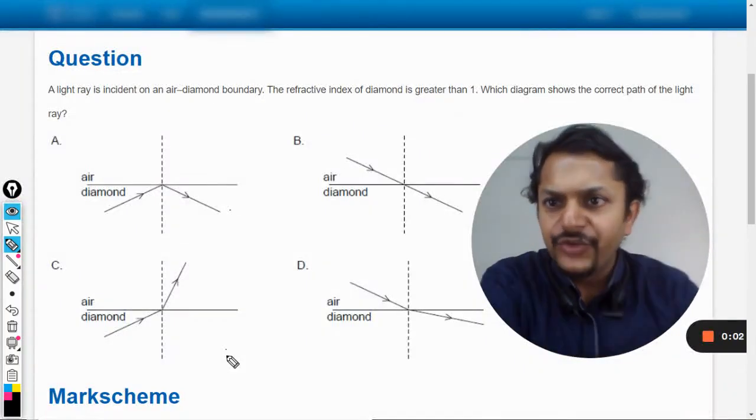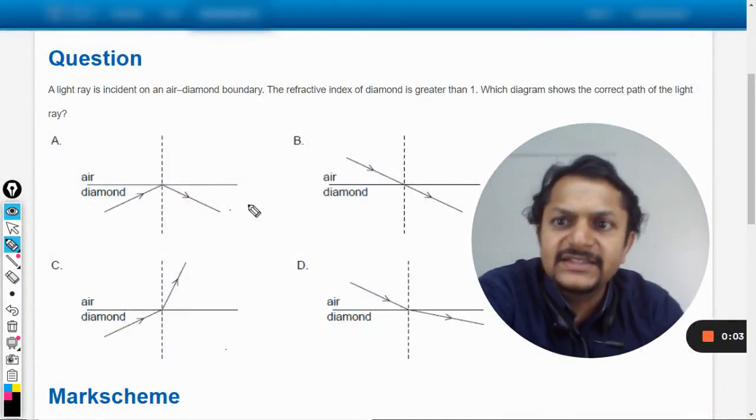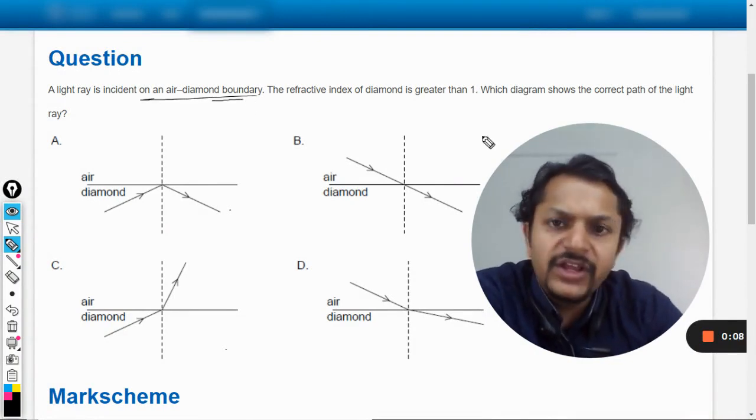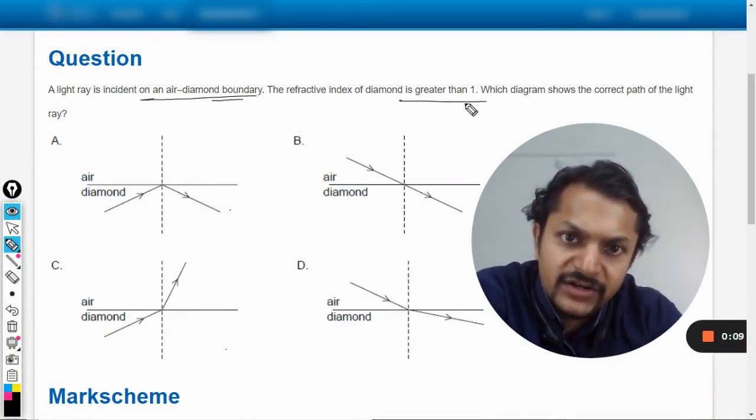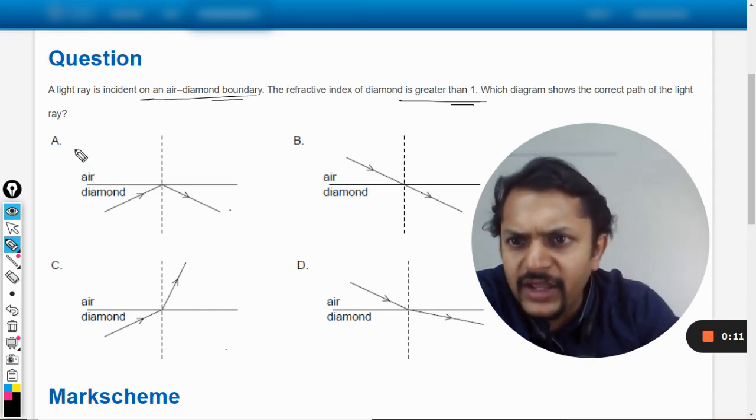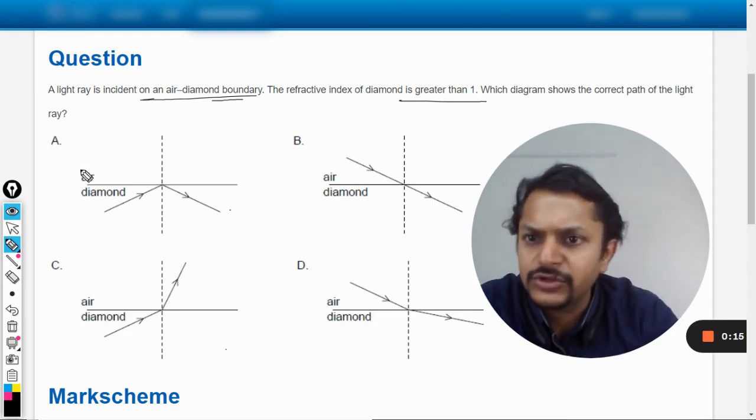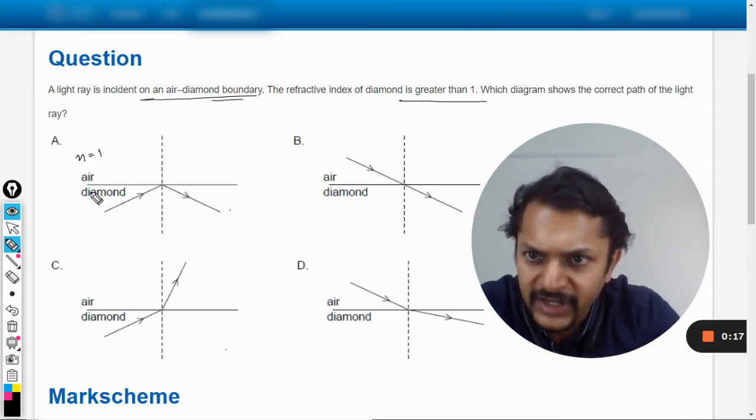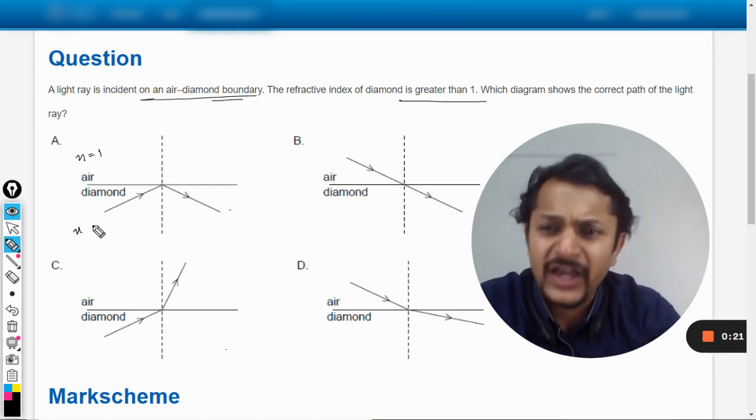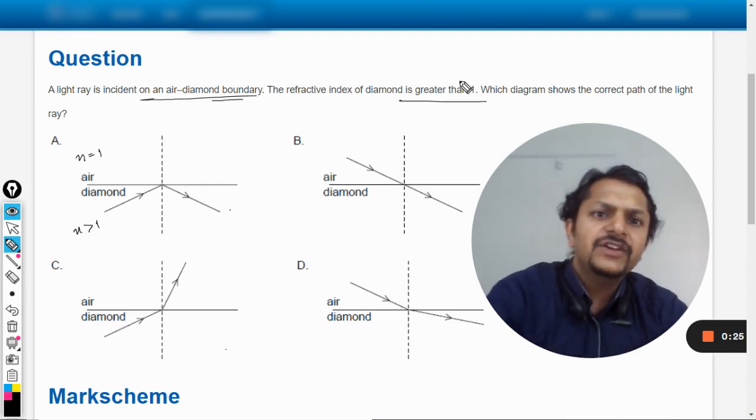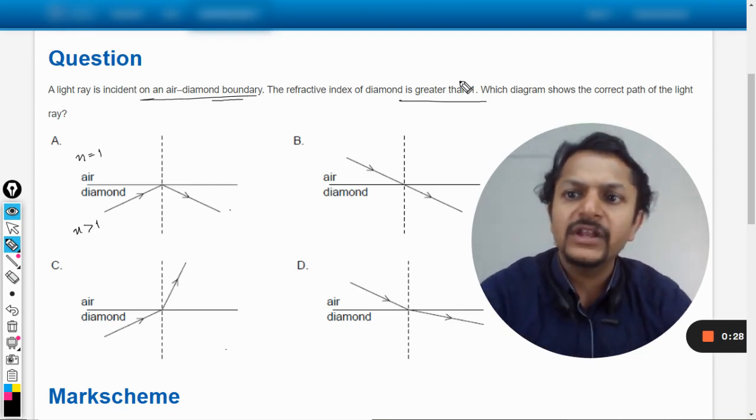Okay dear students, let us read this question. A light ray is incident on an air-diamond boundary. The refractive index of the diamond is greater than 1. So for air, the refractive index is 1. In many books it is written as n, so let us call it n only. And in the diamond, the n is nearly about 2.5, but anyways it is greater than 1. Which diagram shows the correct path of the light ray?